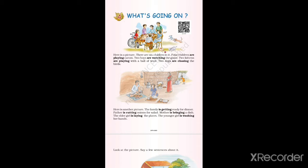Now look at the second picture. Do you see there are four people? They are all doing something. Let's read the lines: 'Here is another picture. The family is getting ready for dinner. Father is cutting onions for salad.'